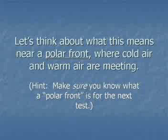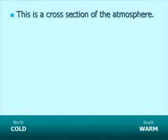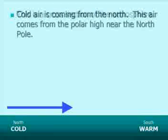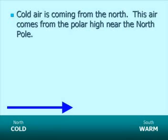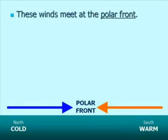This concept — relating temperature to the thickness of a layer and to the height of a pressure level — is important when thinking about what's going on along a polar front, where cold air and warm air meet. Make sure you know what a polar front is for the next test. We're going to draw a cross-section of the atmosphere: to the left is north (cold), to the right is south (warm). Cold air comes from the north and warm air from the south, meeting at the polar front — whether it's a cold, warm, or stationary front doesn't matter.